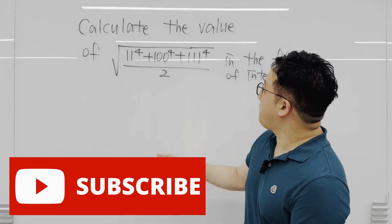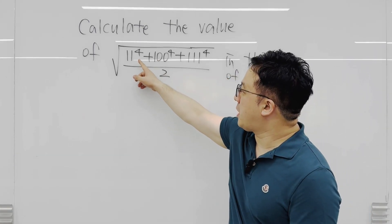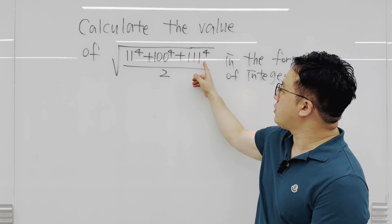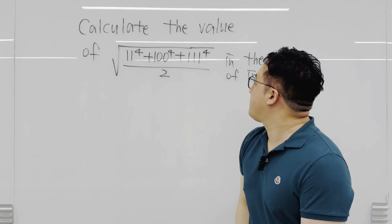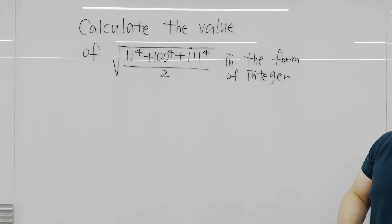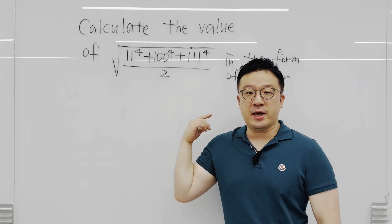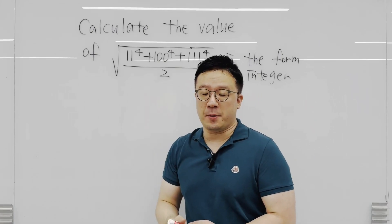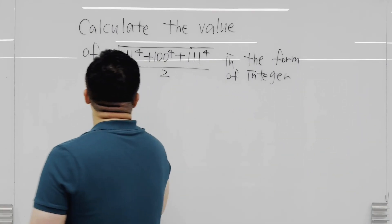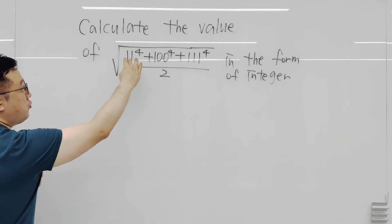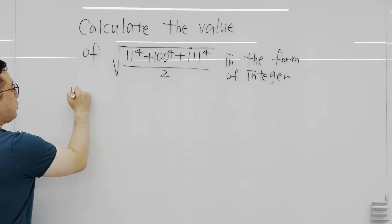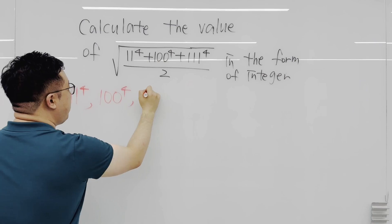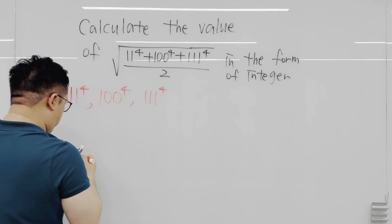The question is: calculate the value of the square root of 11 to the power of 4, plus 100 to the power of 4, plus 111 to the power of 4, over 2, in the form of an integer. Since we need to present the answer as an integer, what you have inside the square root should be a perfect square. So we need to focus on the numbers inside, especially the numerator part — we have 11⁴, 100⁴, and 111⁴.